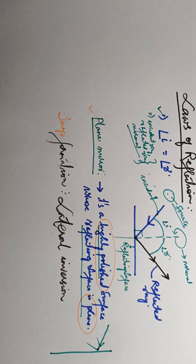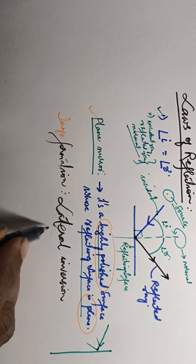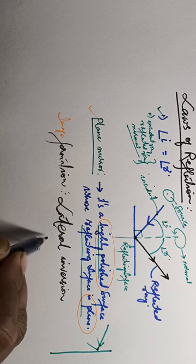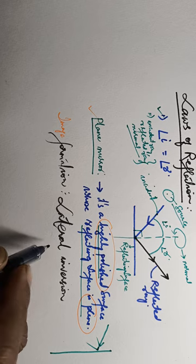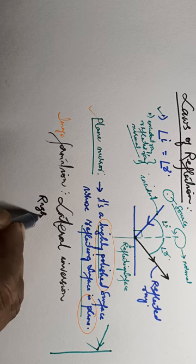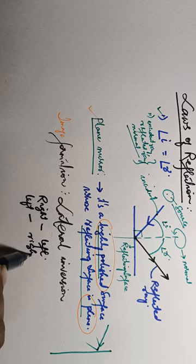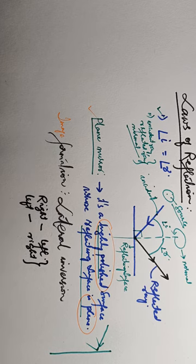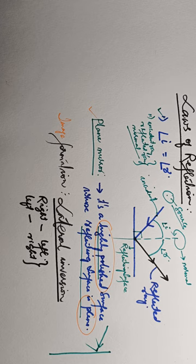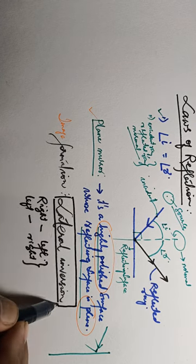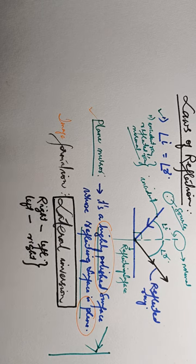This may be a new word, but it's a very old experience. In a mirror, when you write with your right hand, it will appear as if you are writing with your left hand. The right appears to be the left, and the left appears to be the right. This property — where the mirror inverts the image sideways — is called lateral inversion.